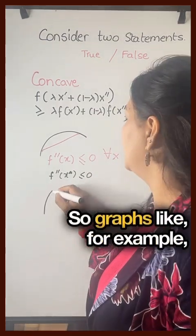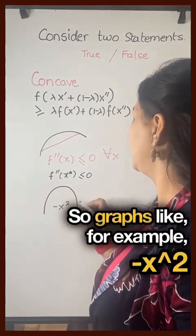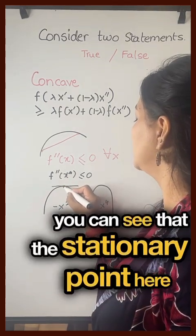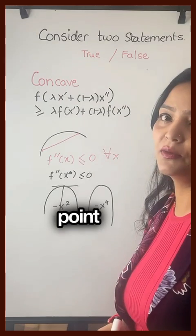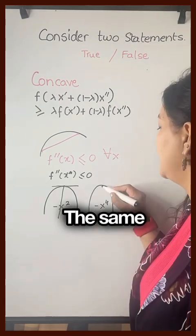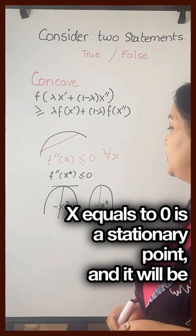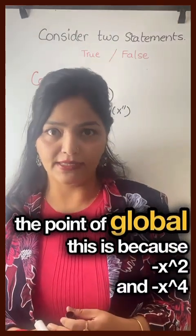So for graphs like -x² or -x⁴, you can see that the stationary point is definitely the point where you have the global max. The same case happens here: x equals zero is a stationary point and it will be the point of global max. This is because -x² and -x⁴ are both strictly concave functions.